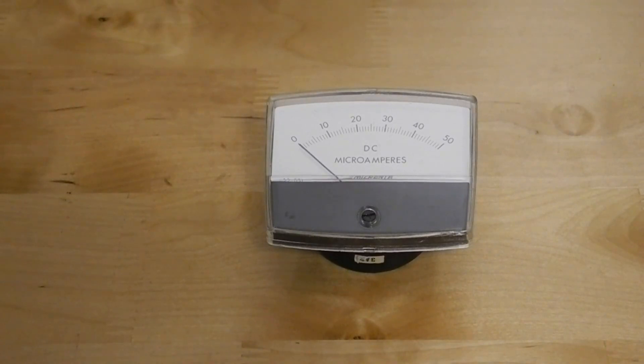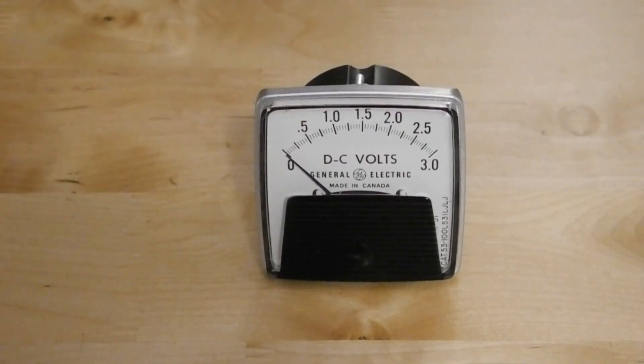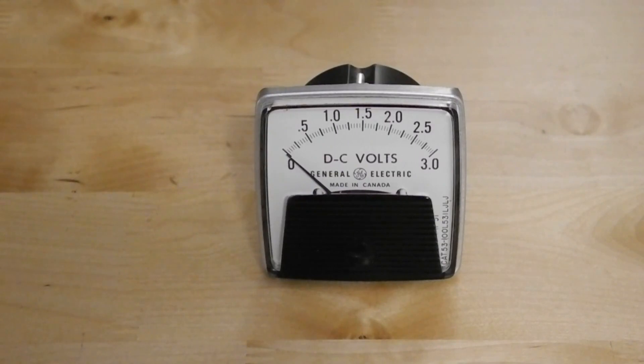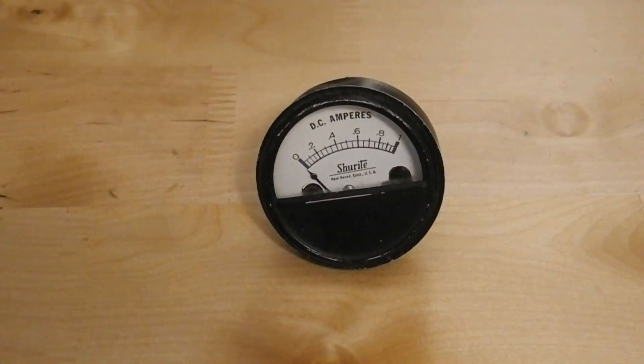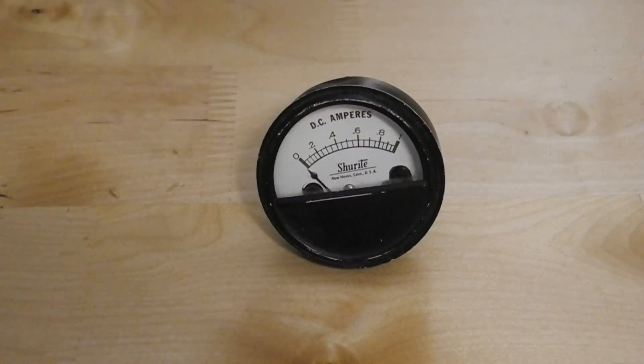The basic meter movement responds to current, typically a few tens or hundreds of microamps for a full-scale reading. Adding a series resistance allows it to measure voltage for any desired range. The resistor limits the current flowing through the meter when a higher voltage is applied. Adding a parallel or shunt resistance, it can measure higher current ranges. The shunt allows a portion of the current to pass through it rather than directly through the meter.